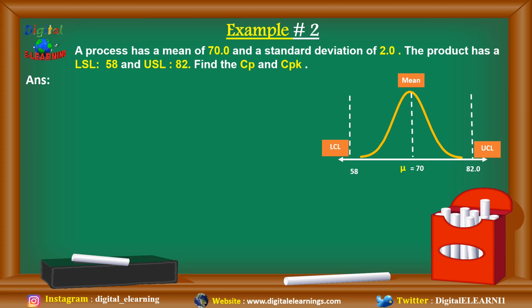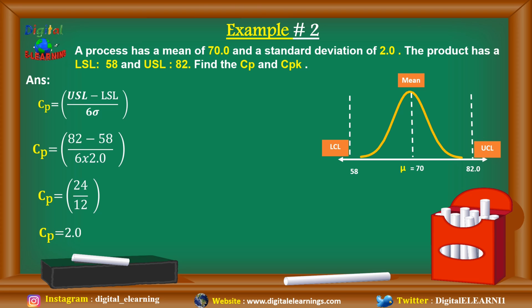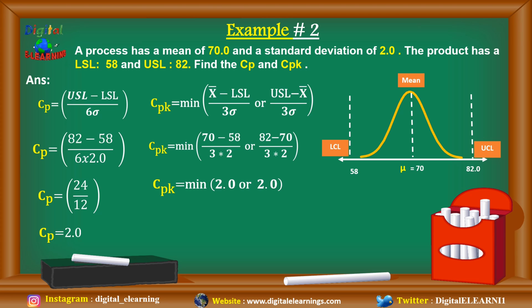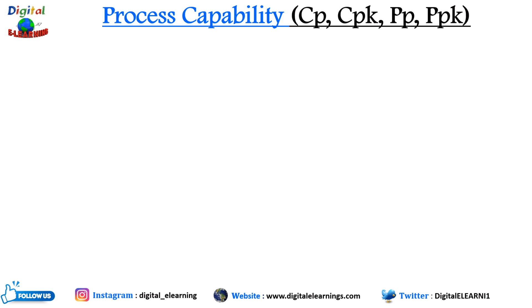For cp: (82 − 58) / (6 × 2) = 24 / 12 = 2. For cpk, we calculate the minimum of: (70 − 58) / (3 × 2) = 12 / 6 = 2, or (82 − 70) / (3 × 2) = 12 / 6 = 2. Both values are the same, so cpk = 2. In this case, the process is highly capable — both cp and cpk are greater than 1, and equal to 2, which is equivalent to a six sigma process.